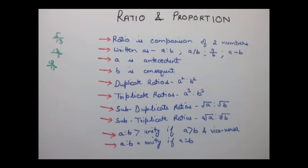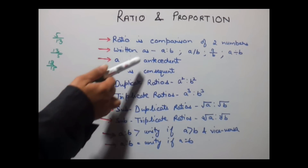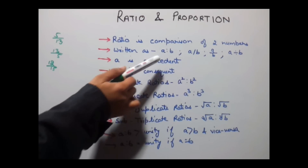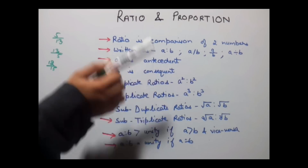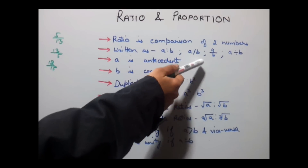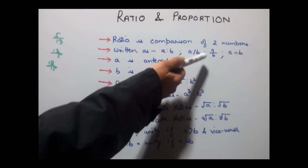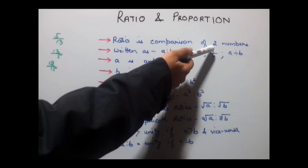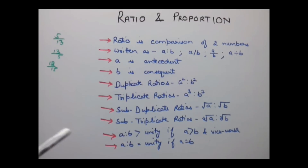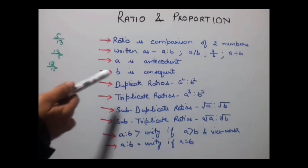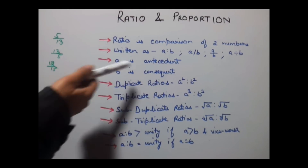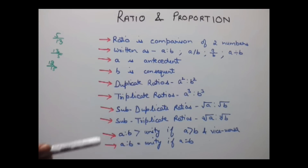A ratio is written as A colon B, or as A slash B, or as A upon B, or A divided by B. All of these mean the same thing — they all represent a ratio.